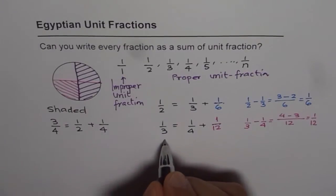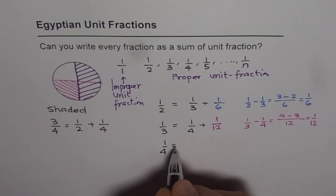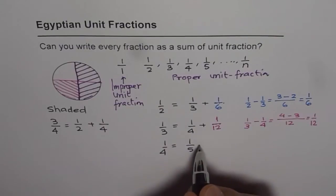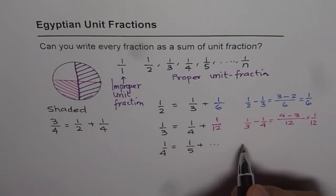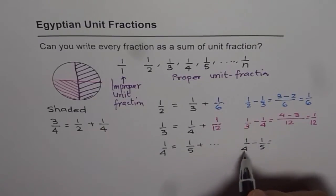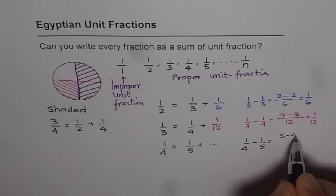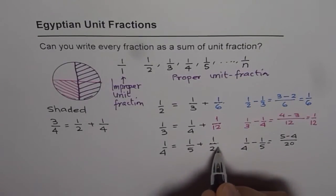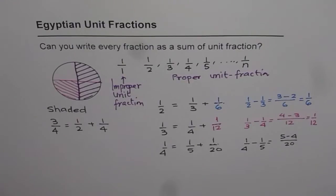Let's try one-fourth. The unit fraction less than one-fourth is one-fifth, so one-fourth equals one-fifth plus something. That something should be one-fourth minus one-fifth. Cross-multiplying: 5 minus 4 over 20, which is 1 over 20. So I can write one-fourth as one-fifth plus one-twentieth. We can write even a unit fraction as a combination of unit fractions.